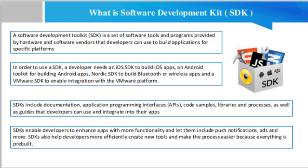When a developer uses an SDK to develop applications and create systems, those applications have to communicate with other applications, and an SDK includes an API to enable that communication. Other differences include: SDKs usually contain APIs, but APIs don't contain SDKs. Although an API can be used for communication, it can't be used to create new applications.